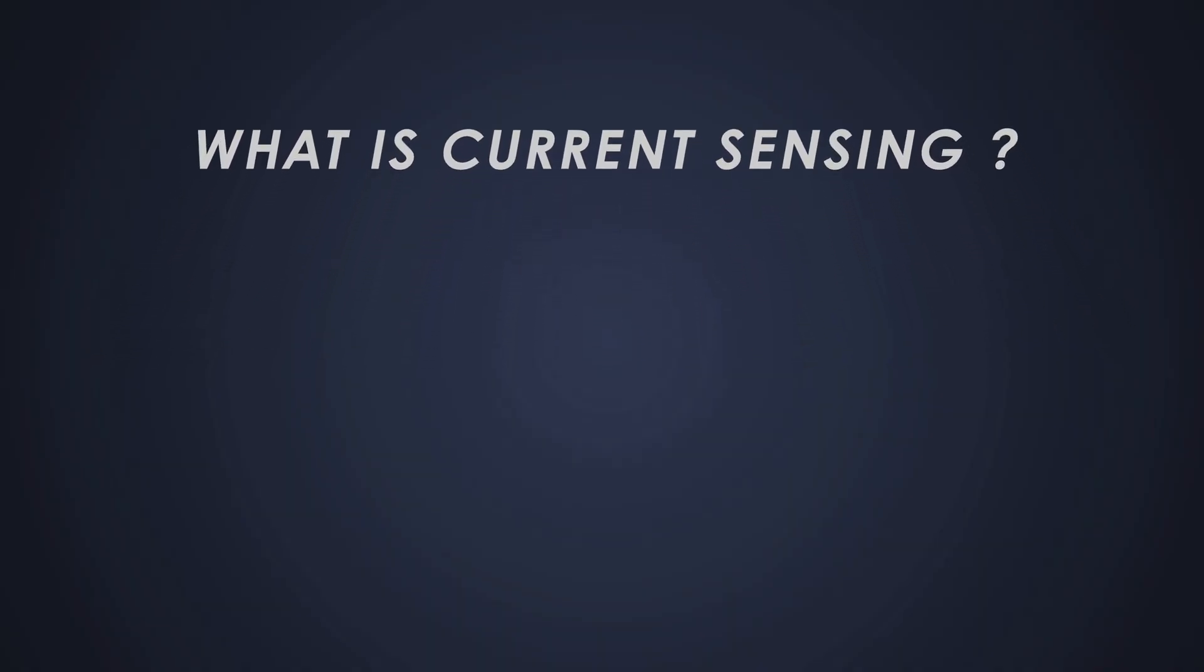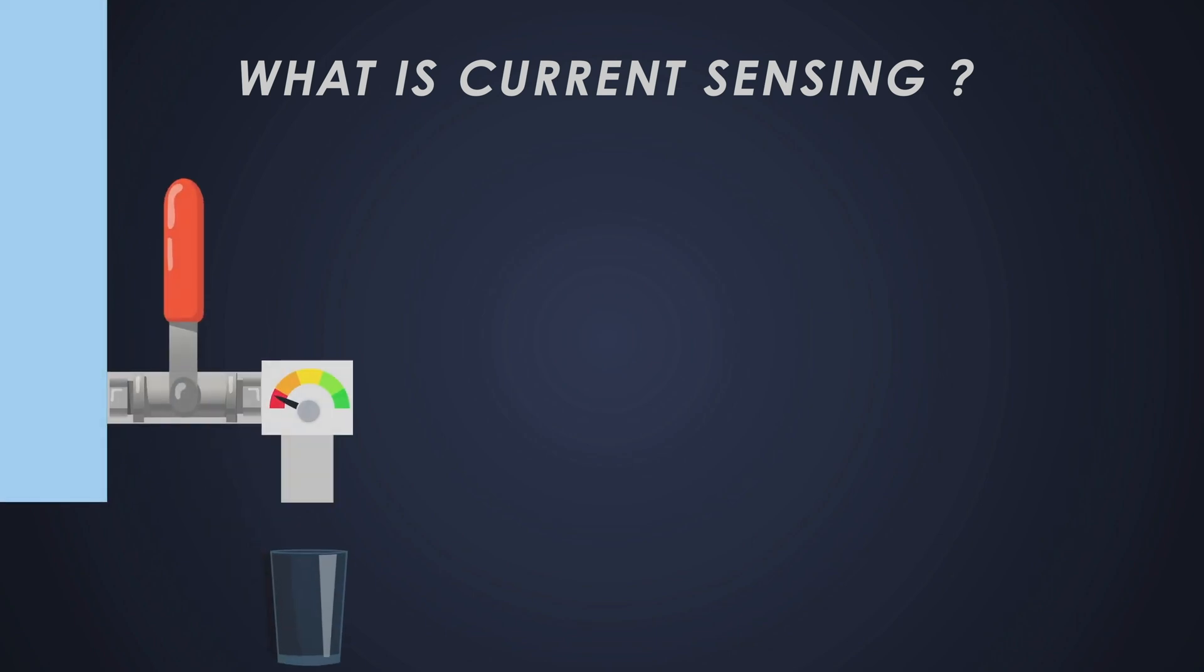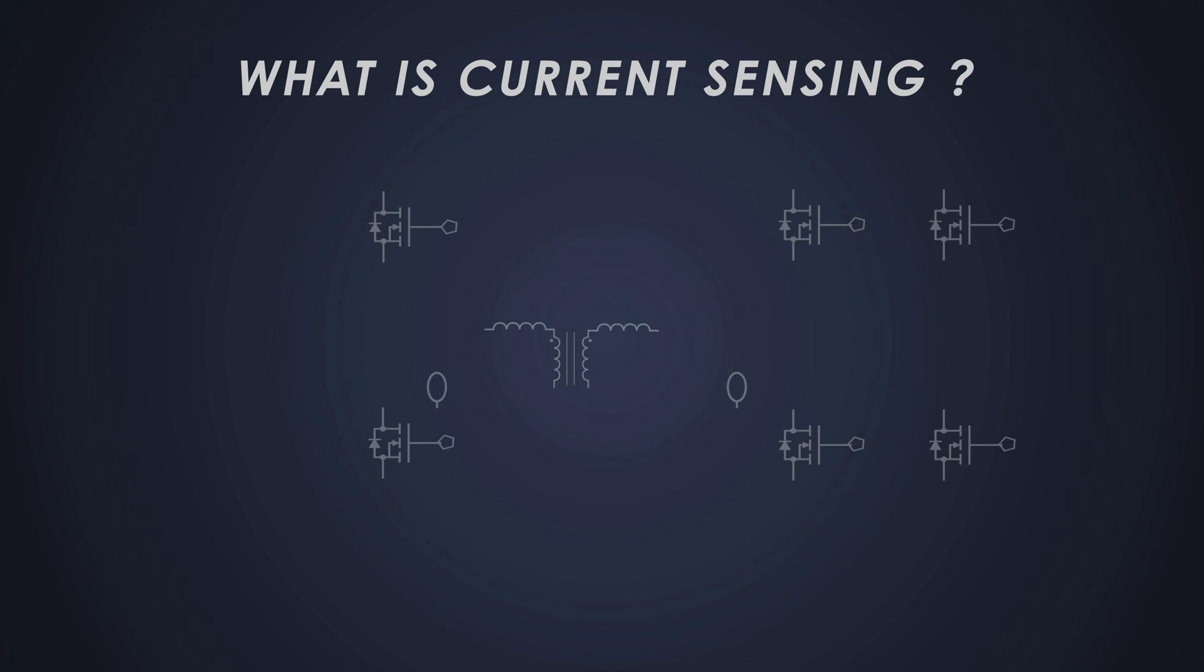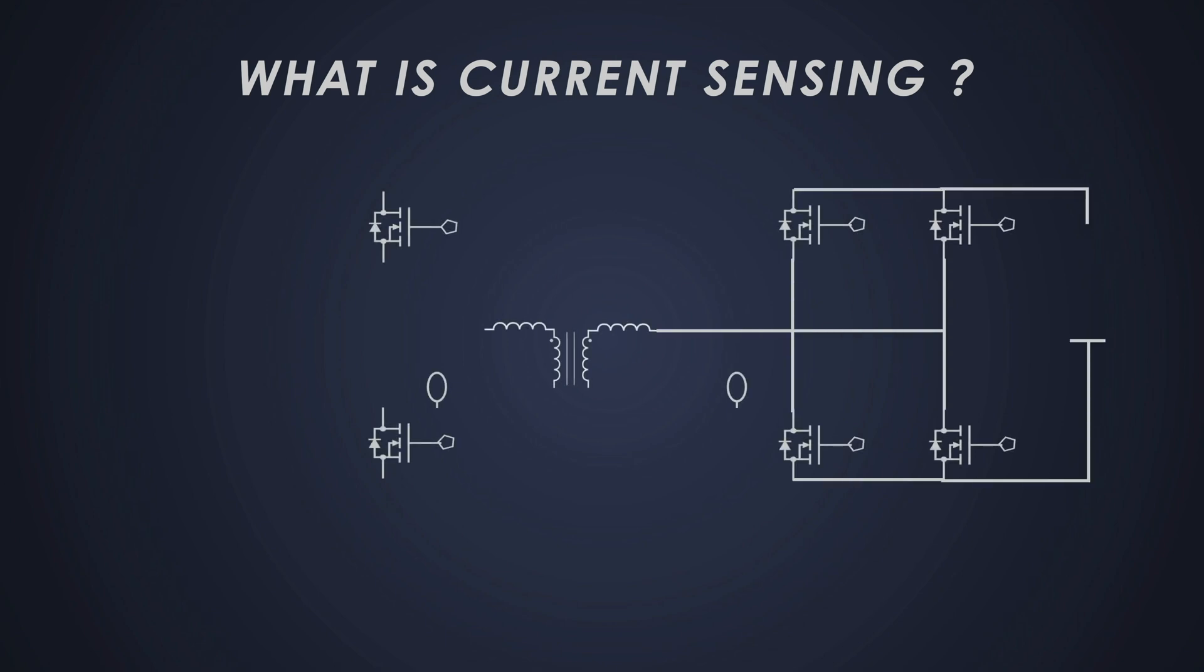First off, let's talk about current sensing. Imagine you have a water pipe running from a reservoir, and you want to measure how much water is flowing through it. In electronics, measuring the flow of electric current is crucial for monitoring and controlling the circuit, just like measuring the water flow.